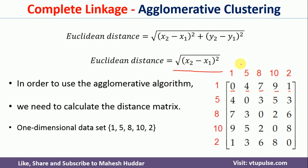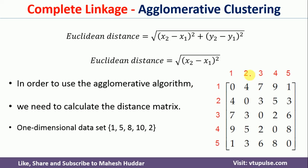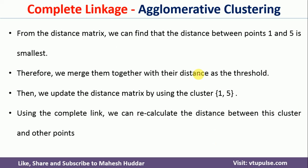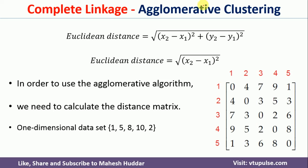Once we calculate the distances, I replace the actual data values with column numbers 1 through 5 and row numbers 1 through 5. These are the distances calculated in our matrix. Now, to apply the Agglomerative Hierarchical Clustering Algorithm, given this distance matrix, we identify the minimum distance.